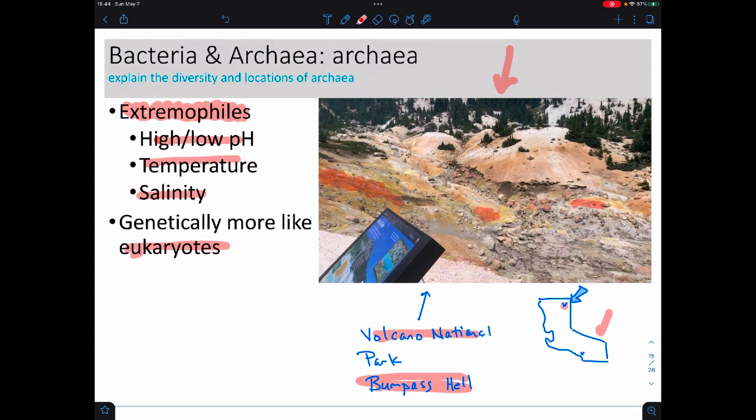Volcano National Park is way up in northern California, and you see all this coloration that you see here. All of that coloration is due to minerals and due to archaeans. It turns out there's a whole bunch of pots of like boiling water in this area, and all of them have life in them, and all that life turned out to be archaeans.